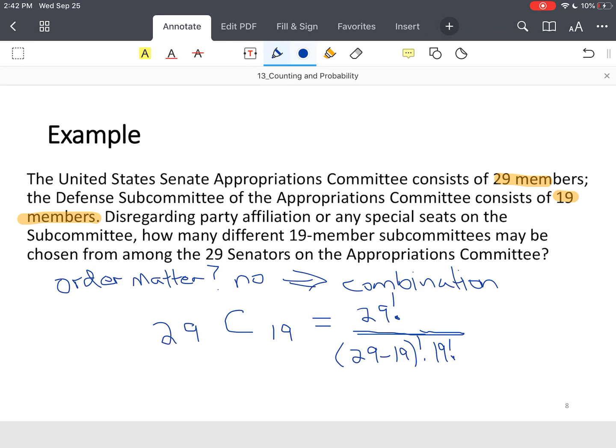Or you can just use your technology. All right, using technology, I type this into my calculator. So 29, most calculators will have a key that says nCr. You put 19, and you end up with 20,030,010 different subcommittee options.